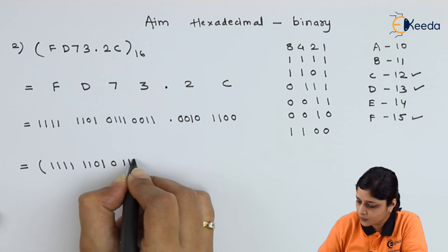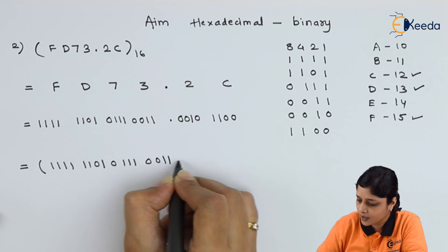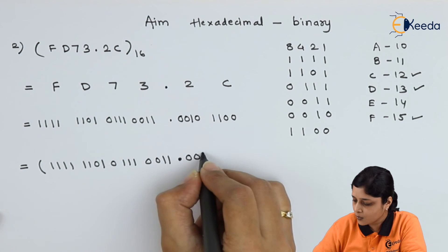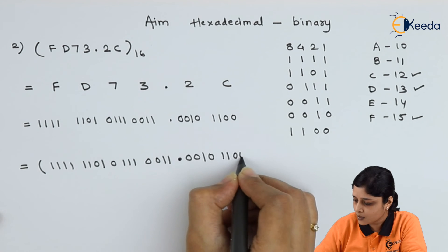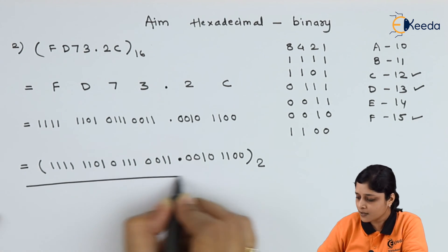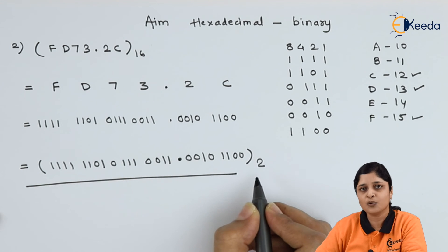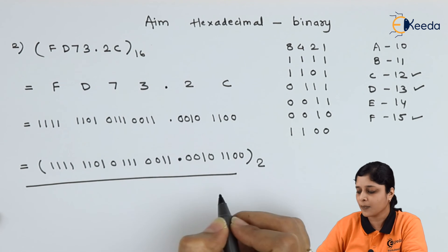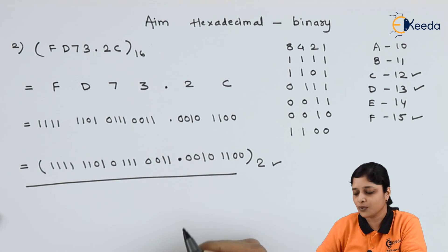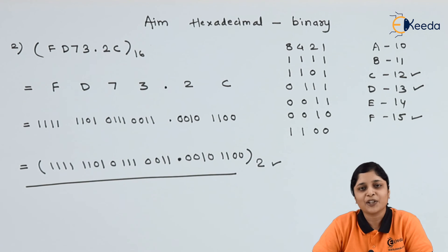The final answer is 1111 1101 0111 0011 decimal point 0010 1100 to the base 2. Mention the answer inside brackets and write down its base as well — the base is the radix. Thank you for watching this video, stay tuned with Ikida and subscribe to Ikida.